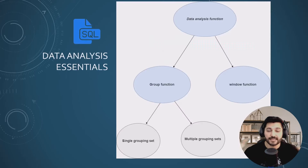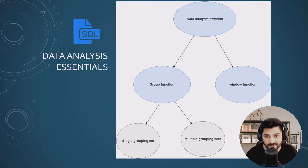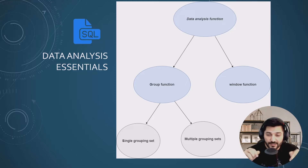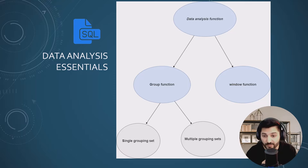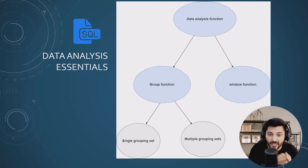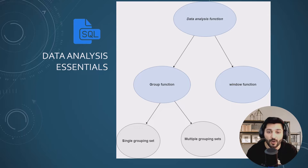This diagram shows the two types of data analysis functions in Transact SQL: group functions and window functions. In this tutorial we'll focus on group functions; window functions will be covered in the next video. For group functions we have single grouping sets — which use GROUP BY — and multiple grouping sets, which include GROUPING SETS, CUBE, ROLLUP, and GROUPING. That's enough theory — let's switch to practice.